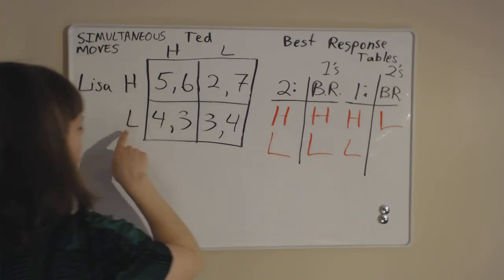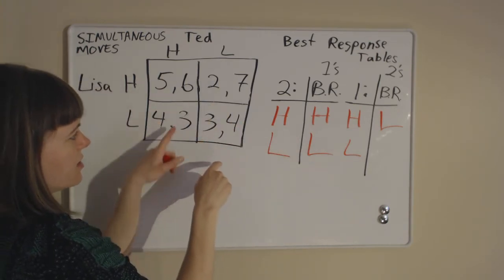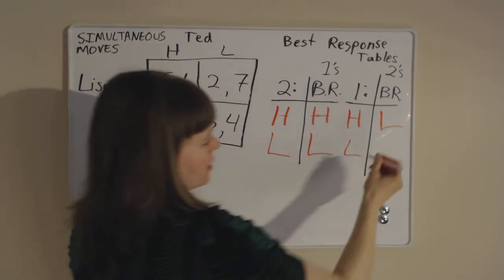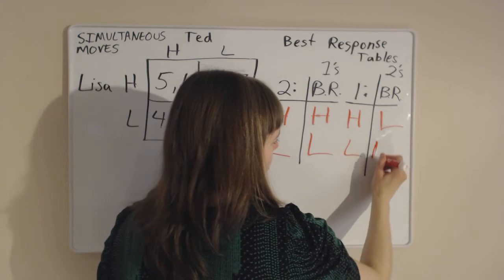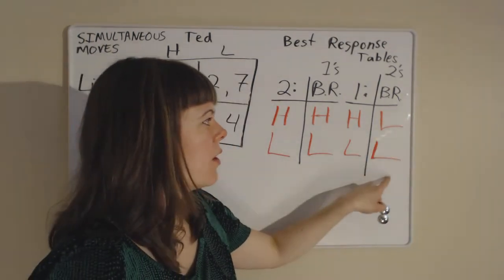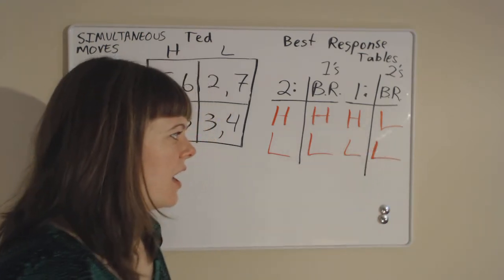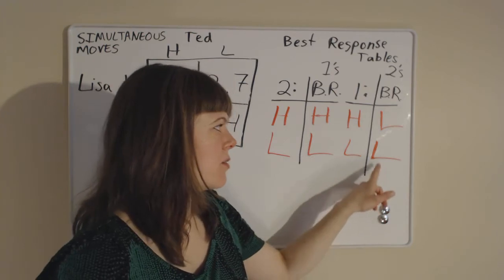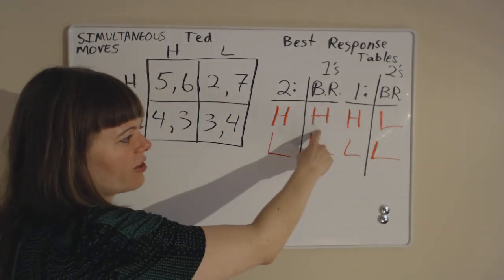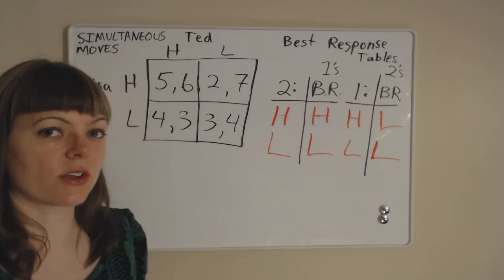If Lisa chooses low, we're down here in one of these two boxes. Ted is choosing between the three and the four, and he likes the four better, so his best response is to go low. We notice that Ted is going to want to go low no matter what Lisa does — Ted actually has a dominant strategy, which is to go low. Lisa does not have a dominant strategy because her choice depends on what Ted is going to do.